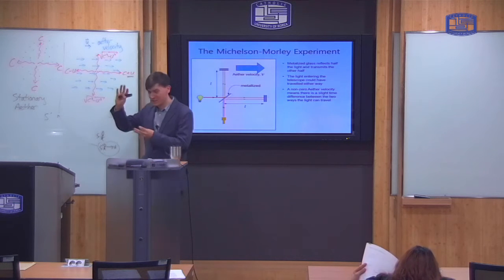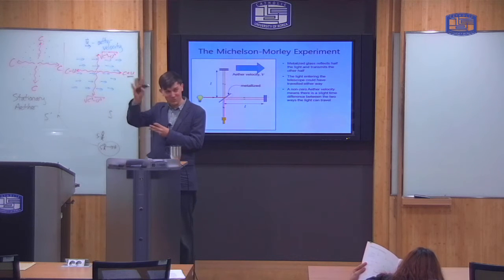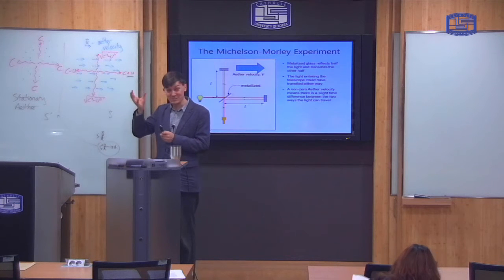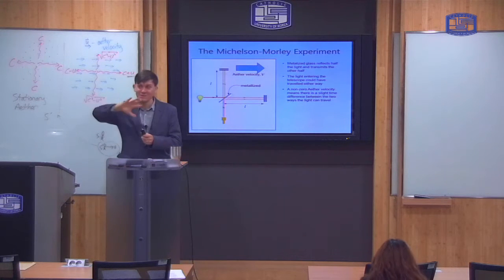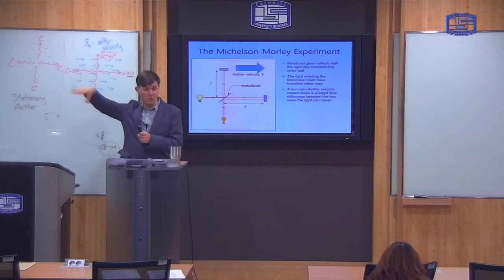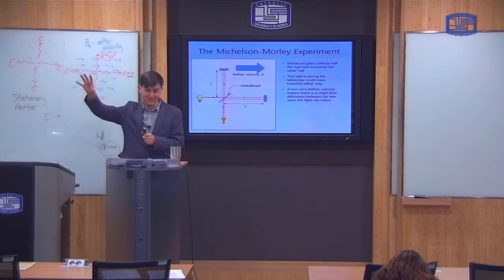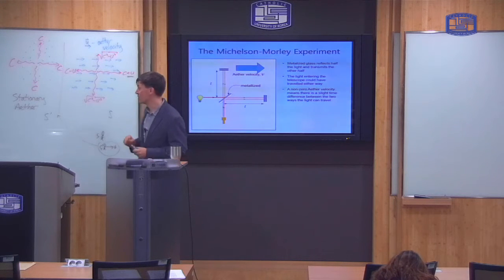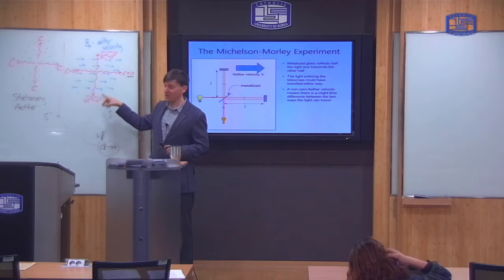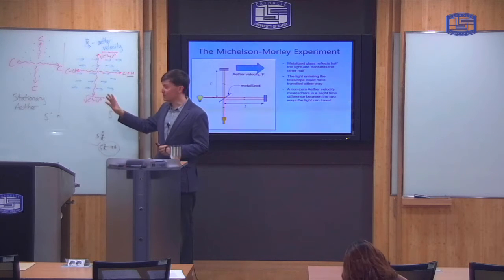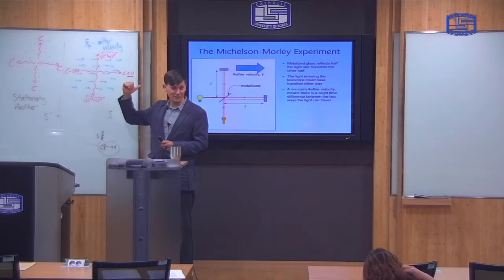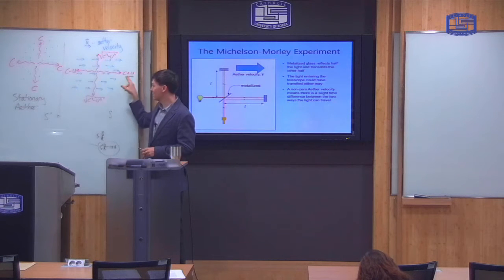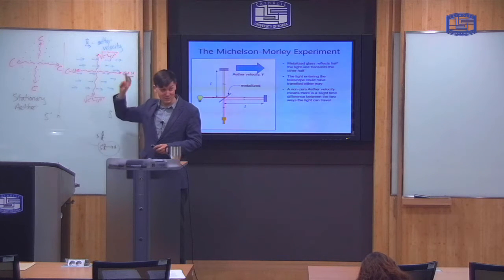Before the break we talked in detail about the ether theory. The idea was that there is some medium throughout the whole of space and the speed of light is determined relative to this medium. We calculated what the speed of light would look like if you are moving through the ether — if the ether has a velocity u in this direction, then the speed of light is different in different directions.